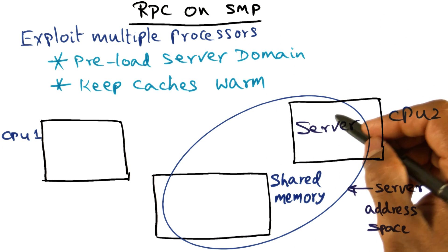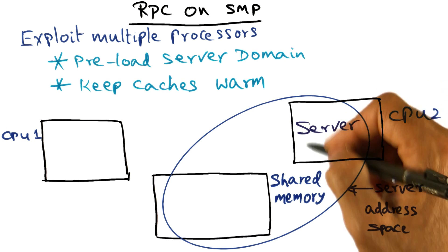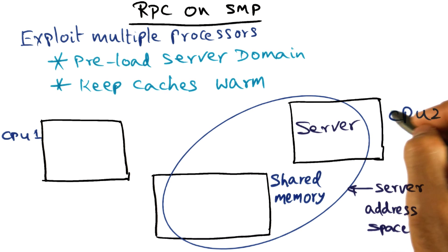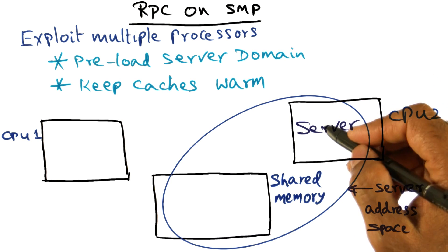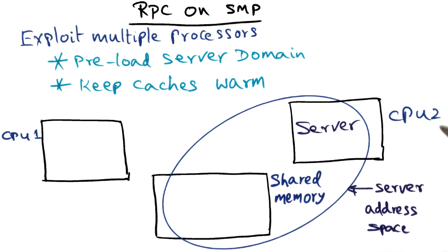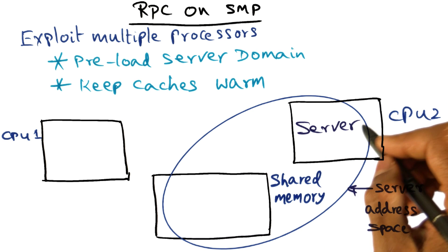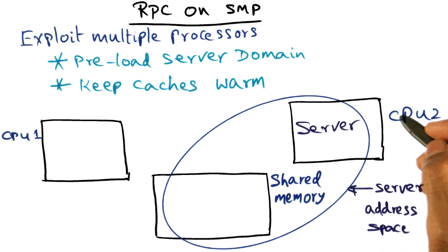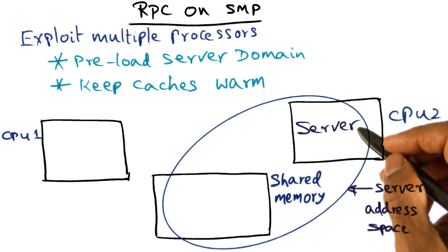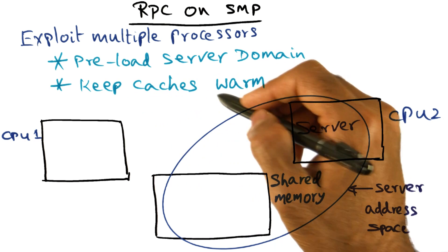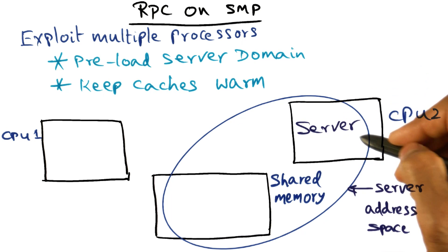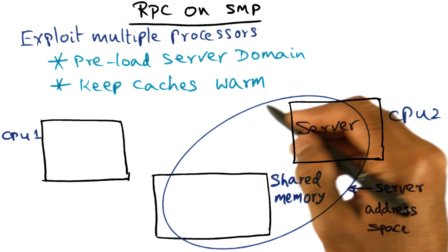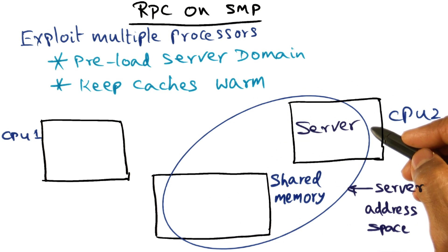What we mean by that is, if we preload a server domain in a processor and don't let anything else run on that processor — this particular server is loaded on CPU 2 — we're not going to let any other thing disturb what's going on in the CPU. What that would mean is that the caches associated with the CPU will be warm with the stuff that this particular domain needs.